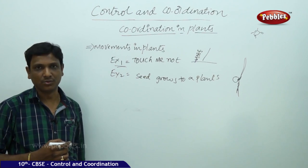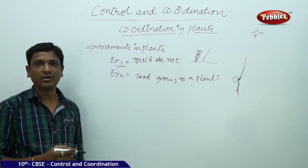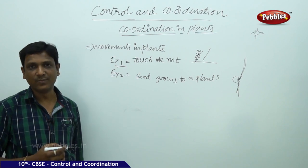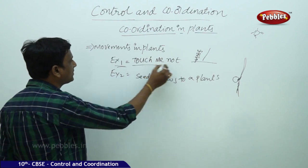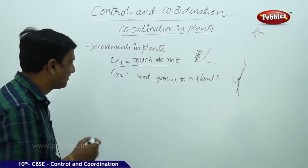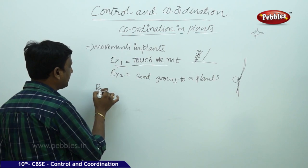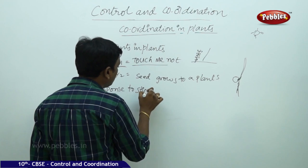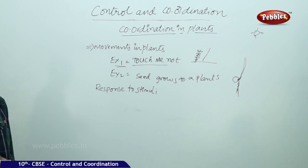But how are these movements controlled and coordinated? Plants do not have nervous tissue like animals. In example one, the touch-me-not shows a quick movement — just like reflexes in animals. This is a response to stimuli. The stimulus is touching the leaves, and the response is that the leaves droop.